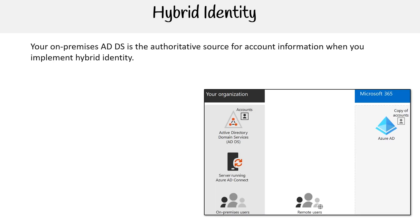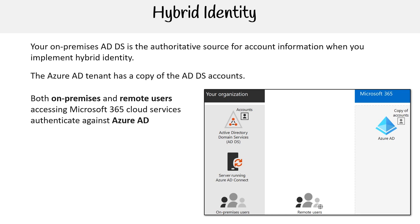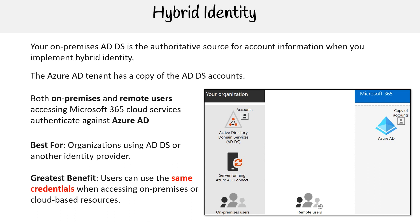Continuing on with hybrid identity, your on-premises AD DS is the authoritative source for account information when you implement hybrid identity. The Azure AD tenant has a copy of the AD DS accounts, and both on-premises and remote users accessing Microsoft 365 cloud services authenticate against Azure AD. Hybrid identity is best for organizations using AD DS or another identity provider, and its greatest benefit is that users can use the same credentials when accessing on-premises or cloud-based resources.